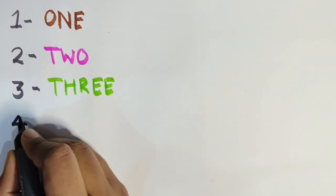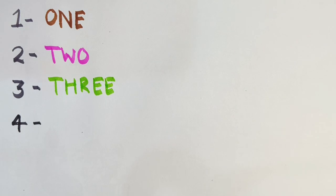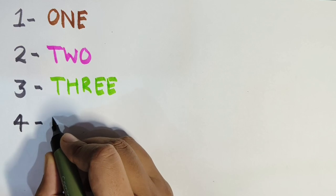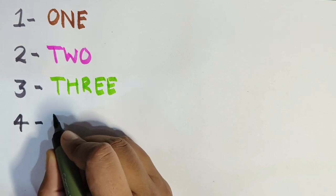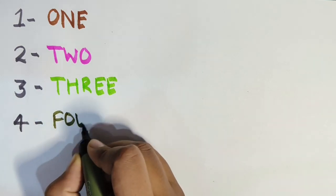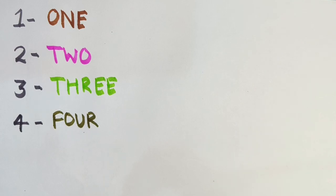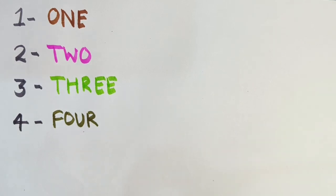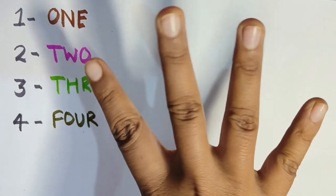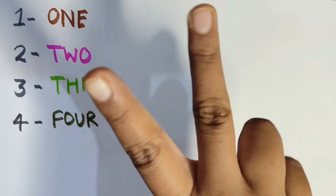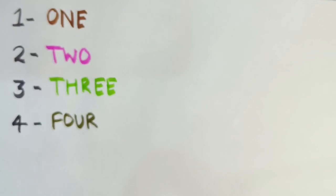Next number is four. Do you know what is the spelling of four? F-O-U-R. Four. F-O-U-R. Four. And these are my four fingers — one, two, three, four. Okay.